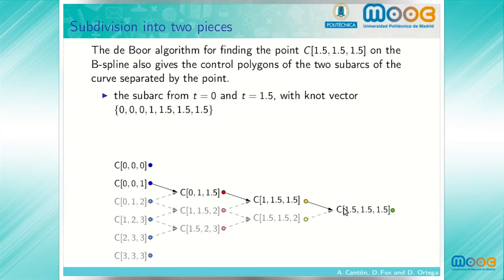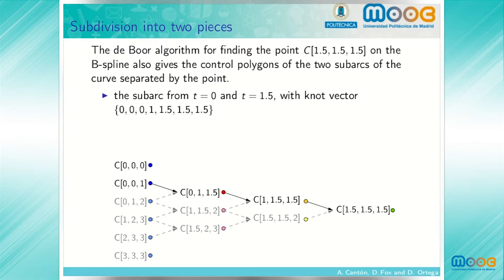This sub-arc has knot vector given by 0, 0, 0, 1, 1.5, 1.5, 1.5, and it can be seen that the control polygon for this sub-arc is obtained by evaluating the polar form in the corresponding entries of the knot vector.